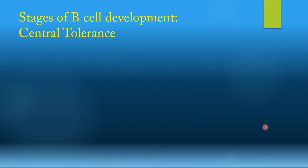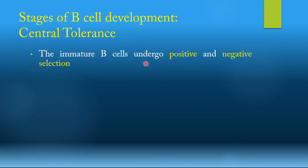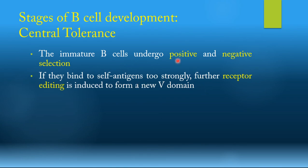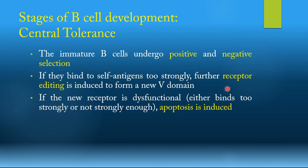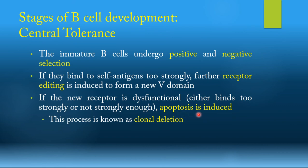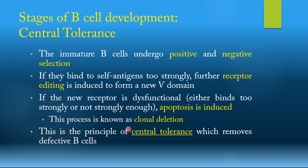Once immature B cells are formed, the bone marrow will start testing them to see which are functional and which are dysfunctional. It tests them via a mechanism called central tolerance. Central tolerance happens by positive and negative selection of immature B cells, where they are presented with self-antigens. If they bind to these self-antigens too strongly, the receptor will be edited to induce a new form of the V domain. If this new receptor is dysfunctional — either by binding too strongly or not strongly enough — apoptosis of the immature B cell is induced. This apoptosis of dysfunctional immature B cells is called clonal deletion.